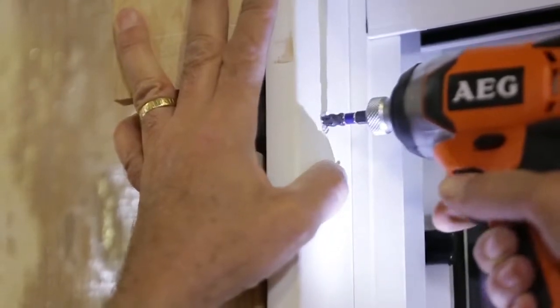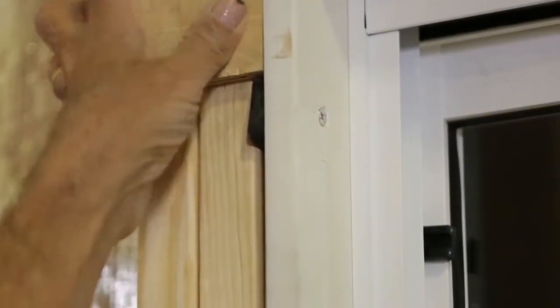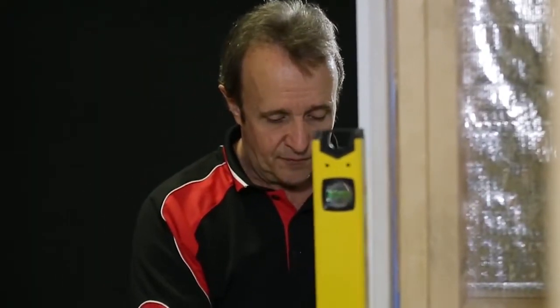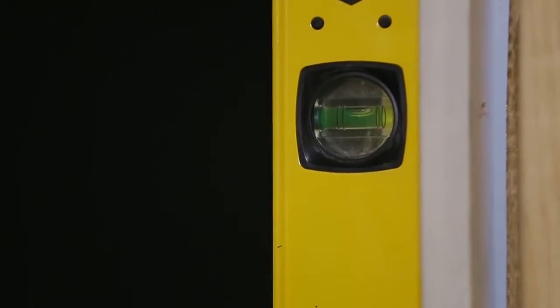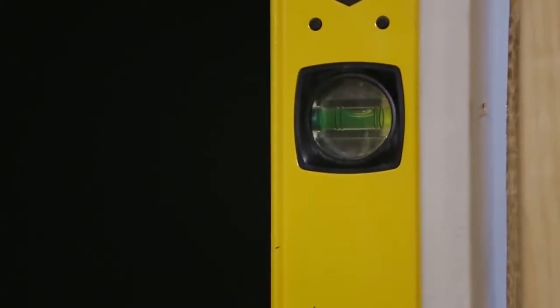Fix the top corners in place. Check jams are plumb using your level and adjust the door position as necessary to make sure the frame is plumb, level, and square. It may take a few goes to get it right, but it's important, so take your time.